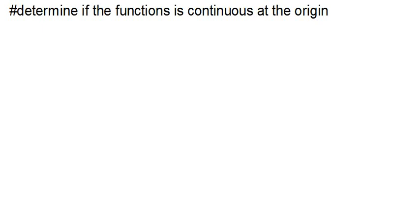We're going to go through how we determine whether a given function is continuous at a given point or not. Sometimes it's at the origin, sometimes it's at any other point that you're given, because there are a lot of coordinates we can pick from the x and y coordinates to give us the output, which is simply z.